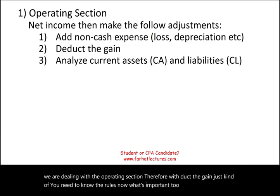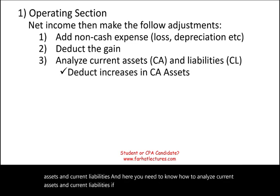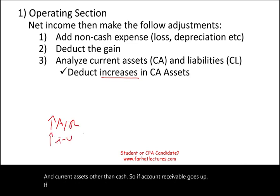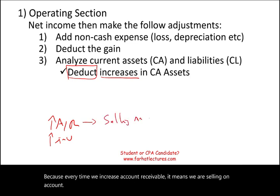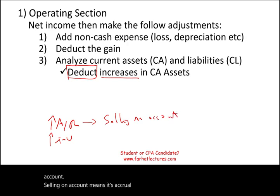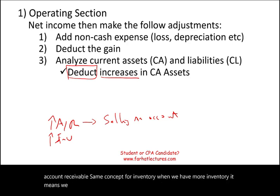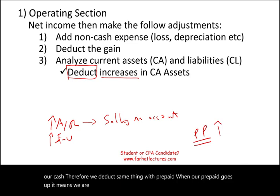What's also important is analyzing current assets and current liabilities. If there is any increase in current assets other than cash — if accounts receivable goes up, if inventory goes up — we deduct this increase. Because every time we increase accounts receivable, it means we are selling on account, which is an accrual sale, not a cash sale. We are converting net income to cash net income. Same concept for inventory: when we have more inventory, we are using up our cash. Same thing with prepaid — when prepaid goes up, it means we are acquiring prepaid and our cash will go down.